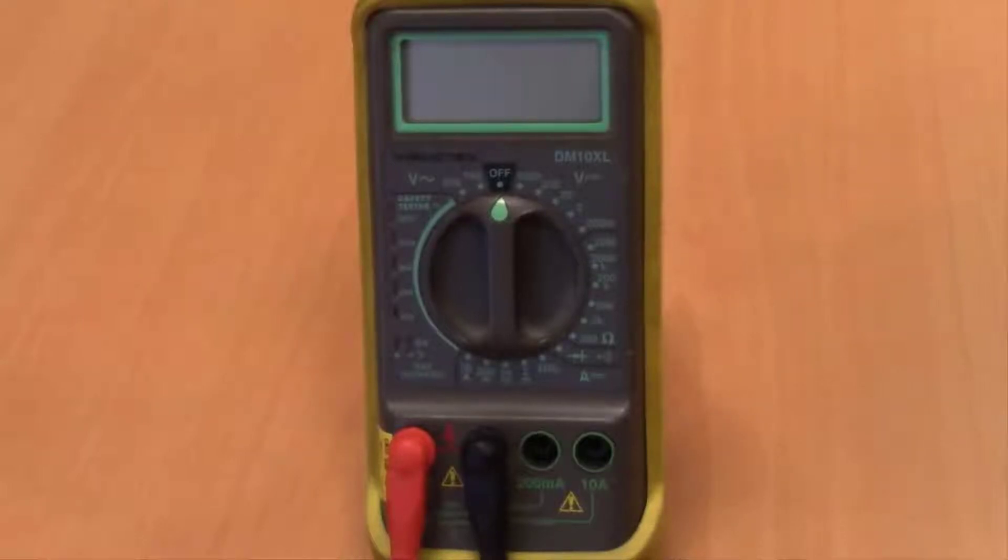Here we're going to be using the Wavetech as an example. This is just an example of one that doesn't auto-range. There's a whole lot of different styles out there. This gives you an opportunity to take a look at one that doesn't have the auto-range feature like the Fluke that we looked at in the earlier video.